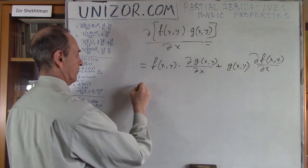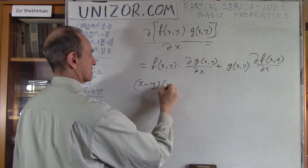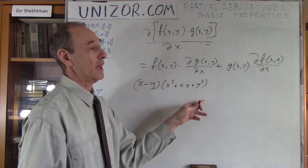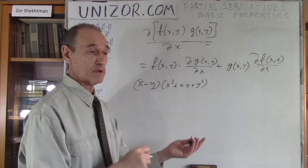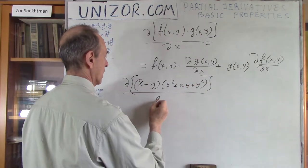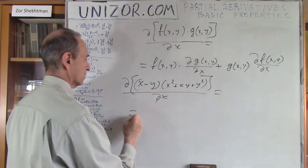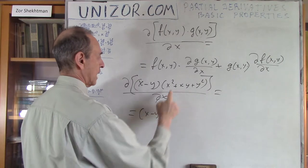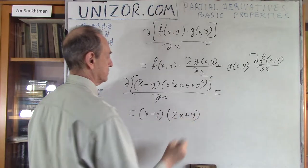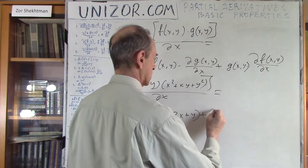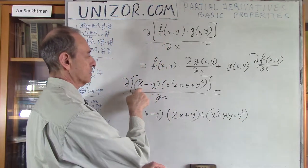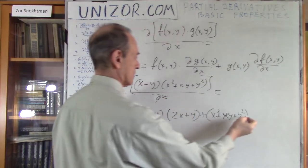Here's an example: (x − y)(x² + xy + y²). I specifically chose this one because we can actually multiply and simplify it, then compare the results. So, d/dx of this product equals the first factor (x − y) times the partial derivative of (x² + xy + y²) by x, which is 2x + y, plus the second factor (x² + xy + y²) times the partial derivative of (x − y) by x, which is 1.